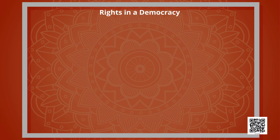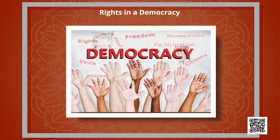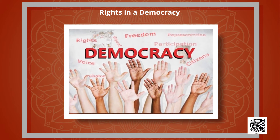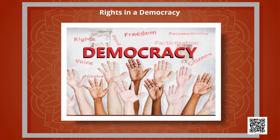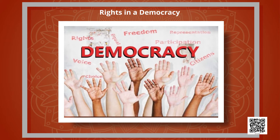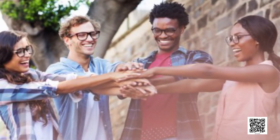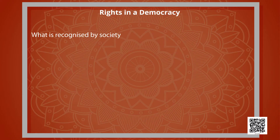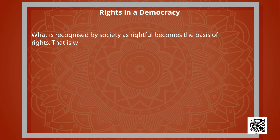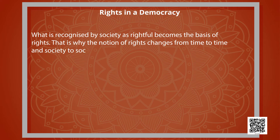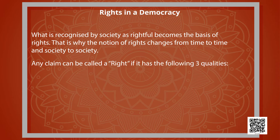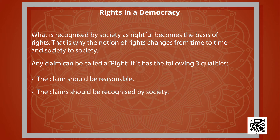Moving on to Rights in a Democracy. All of us want to live happily without fear and without being subjected to bad treatment. A right is possible when you make a claim that is equally possible for others. A right comes with an obligation to respect others' rights. What is recognized by society as rightful becomes the basis of rights. Any claim can be called a right if it has the following three qualities: the claim should be reasonable, recognized by society, and sanctioned by law.